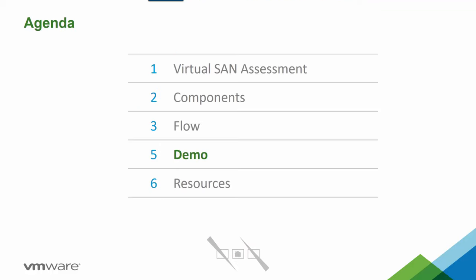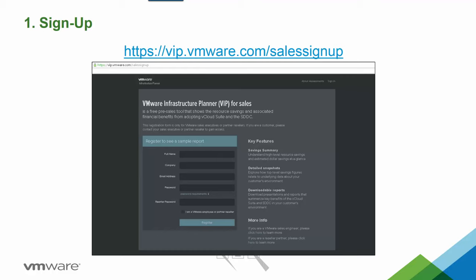Now let's go into the demo. I'll start by showing screen captures for the initial steps, then roll over into the actual live environment to show the results in that report. For partners, you want to go to https://vip.vmware.com/go/salessignup to create your account for the vSAN assessment tool. Once you've created the account, you can go in and create vSAN assessments for your customers and send invitations.